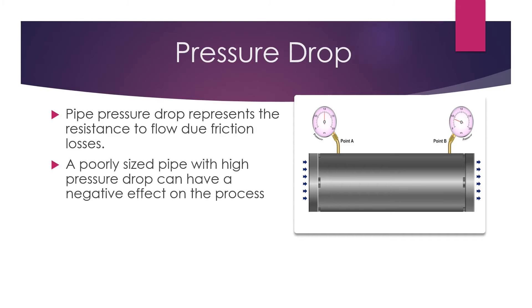If the pipe is not large enough, this shall cause the fluid to lose much pressure. This can be a cause to reduce the flow rate to be less than the desired flow, which can affect the whole plant operation, and may sometimes lead to plant shutdown.